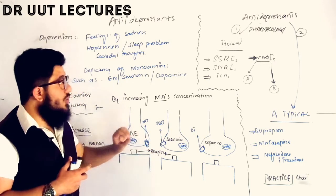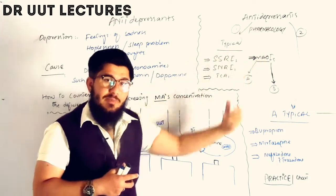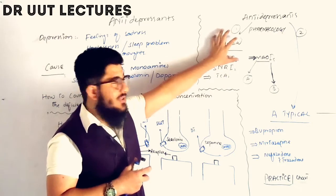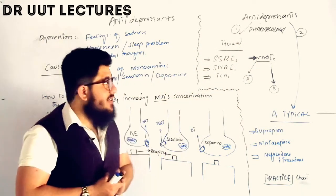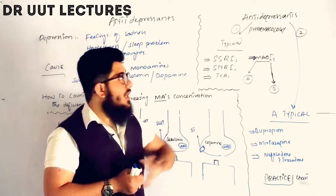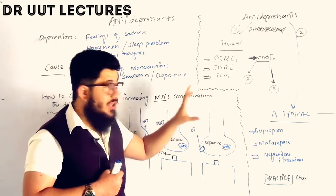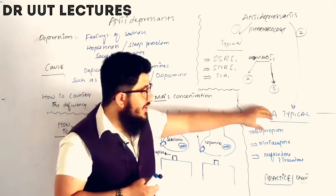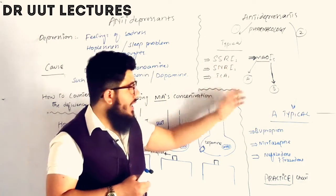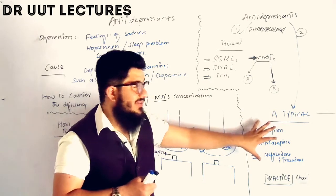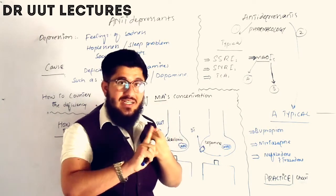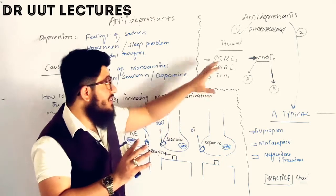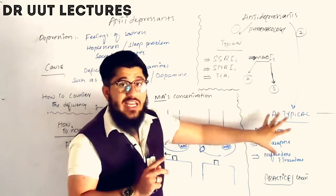Now let's come to the pharmacology, which helps us increase monoamines. We have typical antidepressants and atypical antidepressants. Typical antidepressants have a clear, specific site of action. Atypical antidepressants have a somewhat changed side effect profile and mixed sites of action compared to typical antidepressants — that is why they are placed in the atypical category.